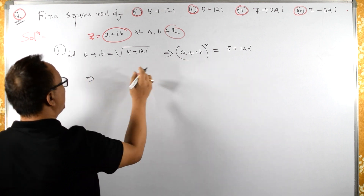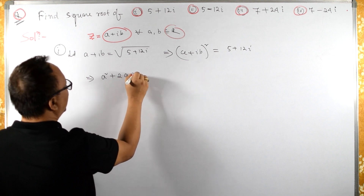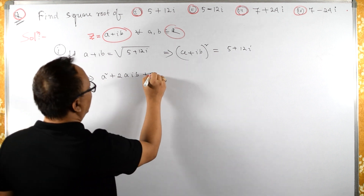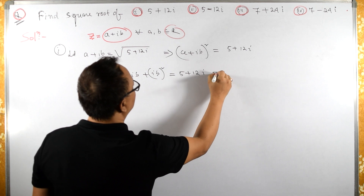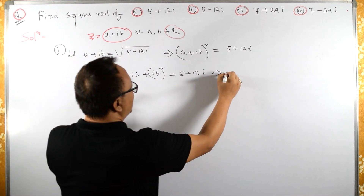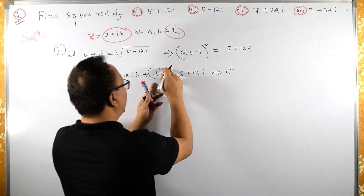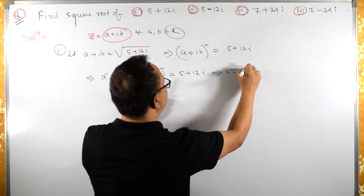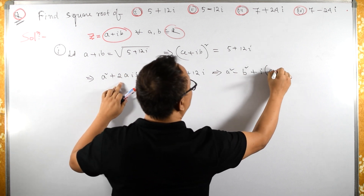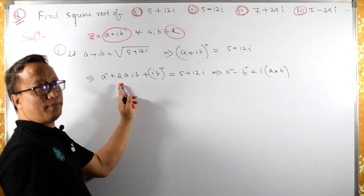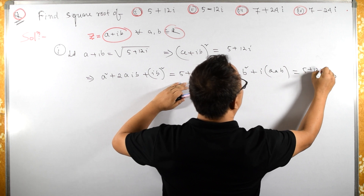Now let us expand this. From the (a plus b) whole square formula, this becomes a squared plus 2·a·ib plus (ib) squared, which equals 5 plus 12i. Here a squared is one term, and i squared b squared — since i squared equals minus 1 — becomes minus b squared. So we have a squared minus b squared plus i times 2ab, equal to 5 plus 12i.